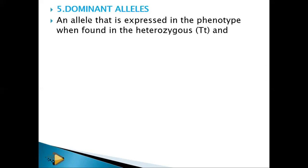Because you have two forms of alleles, one can be dominant and another recessive, or both can be dominant or both recessive. A dominant allele is one that is expressed in the phenotype when found in the heterozygous state. It suppresses the other allele — the capital letter allele suppresses the small letter allele.